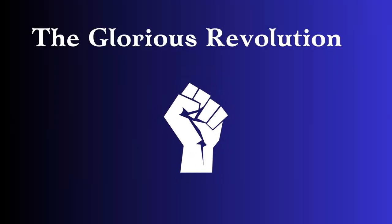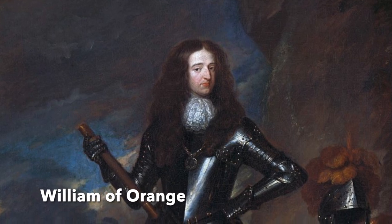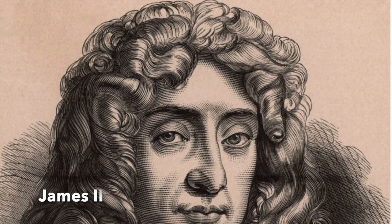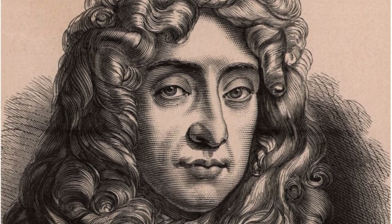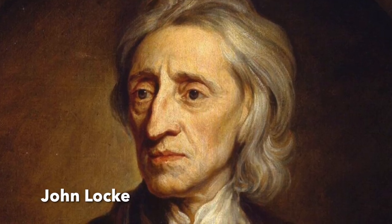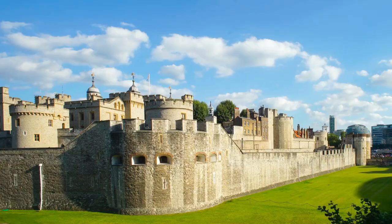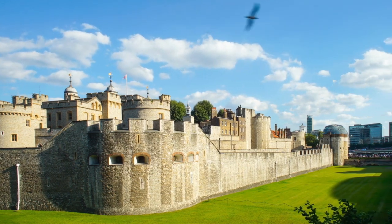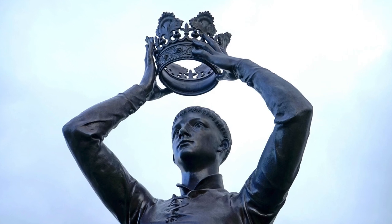The Glorious Revolution occurred in 1688 when William of Orange, a Protestant Dutch prince, was invited to invade England and take the throne from James II. The Glorious Revolution was bloodless and led to significant changes in English governance. It was supported by influential figures such as John Locke, a political philosopher whose ideas on individual rights and limited government influenced the events. The Glorious Revolution established the principle of parliamentary sovereignty, meaning that the power of the monarch was limited by the authority of parliament. This event marked a crucial turning point in English history, shifting power away from the monarch towards a more democratic system.